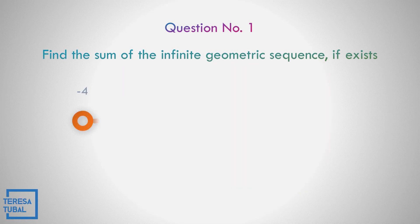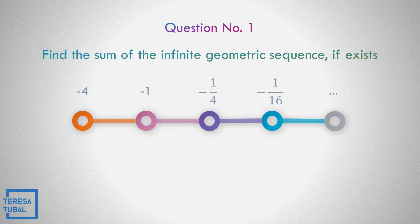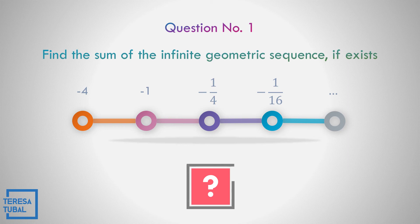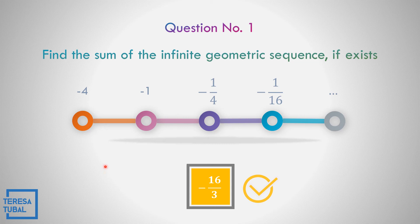Question number 1. Find the sum of the infinite geometric sequence if it exists: negative 4, negative 1, negative 1 fourth, negative 1 over 16. The answer is equal to negative 16 over 3. Because the common ratio is equal to 1 over 4 — negative 1 all over negative 4 is 1 fourth. Since 1 fourth is less than 1, the sum does exist.